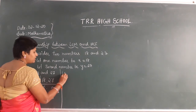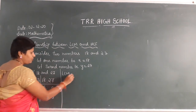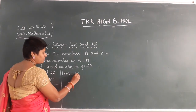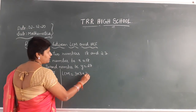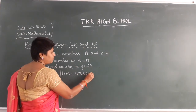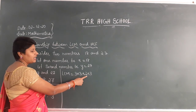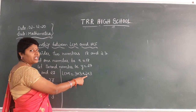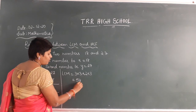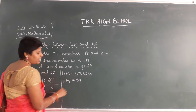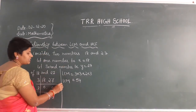So what is the LCM? LCM is equal to 3 × 3 × 2 × 3. So 3 threes are 9, 9 twos are 18, 18 threes are 54. So the LCM is 54. Now let us find the HCM.